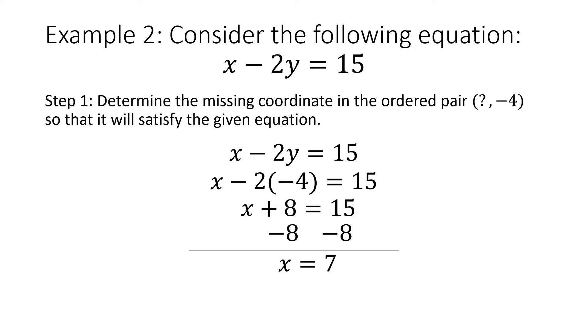So that's going to be my missing coordinate for the ordered pair. To write it as an ordered pair, since x is equal to 7 and that's my first number, it would be 7 comma negative 4.